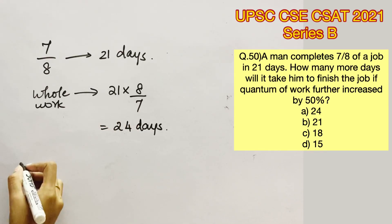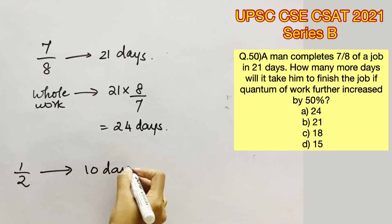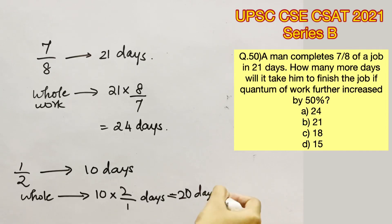I hope you are all aware of the logic that's followed here. For example, consider half a work is completed in 10 days. Now, to find out the number of days required to complete the whole work, we would multiply 10 into the reciprocal of one by two, which is 2. That will give us 20 days. So this is the same logic that we have followed here.